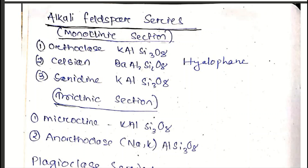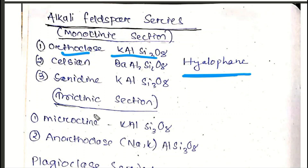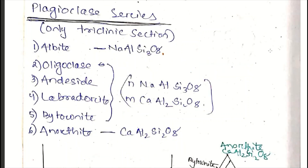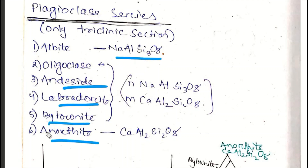In the alkali feldspar series, the monoclinic system includes Orthoclase (KAlSi3O8), Celsian (BaAl2Si2O8), and Sanidine (KAlSi3O8), with the variety Hyalophane. The triclinic section includes Microcline (KAlSi3O8) and Anorthoclase (NaKAlSi3O8). In the plagioclase series: Albite (NaAlSi3O8), Oligoclase, Andesine, Labradorite, Bytownite, and Anorthite (CaAl2Si2O8).